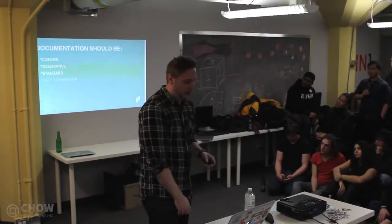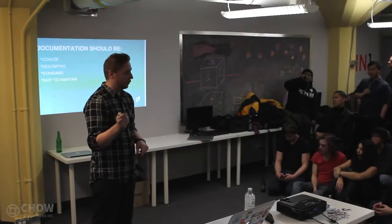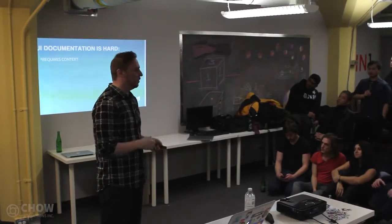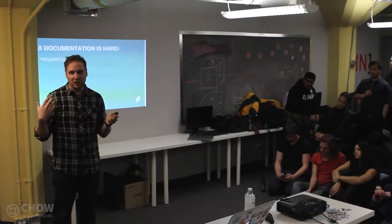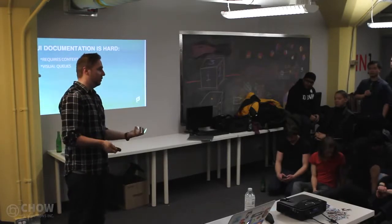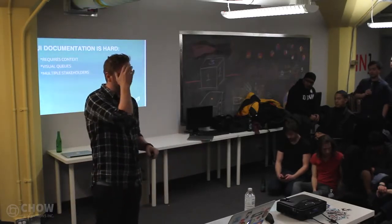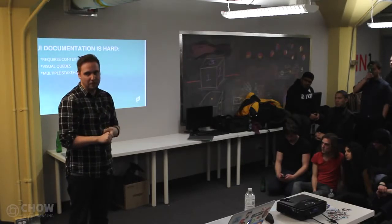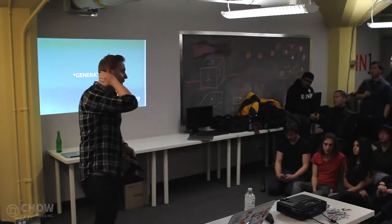I want to focus on references for documenting UI — reference or API documentation. What should documentation be? It should be concise, descriptive, standard, and easy to maintain. UI documentation is hard because it requires context — you don't know whether you're in a mobile, desktop, or tablet context. It also requires visual cues, and it requires multiple stakeholders, since you need HTML, CSS, and JavaScript to actually implement UX and UI.